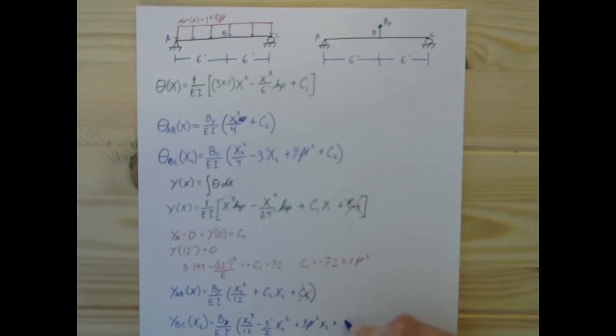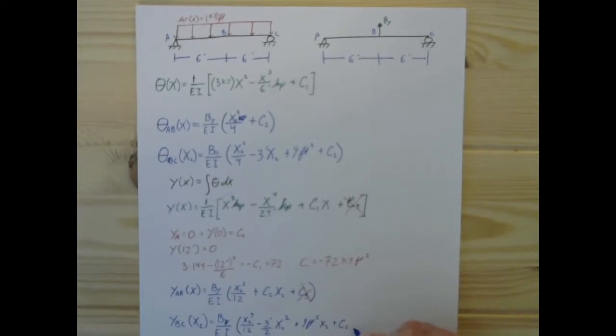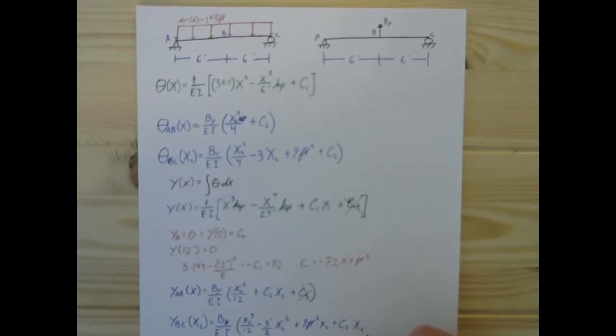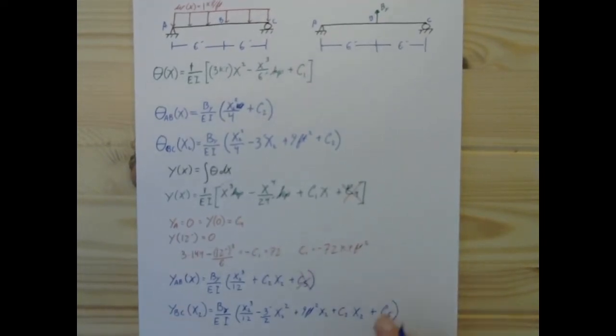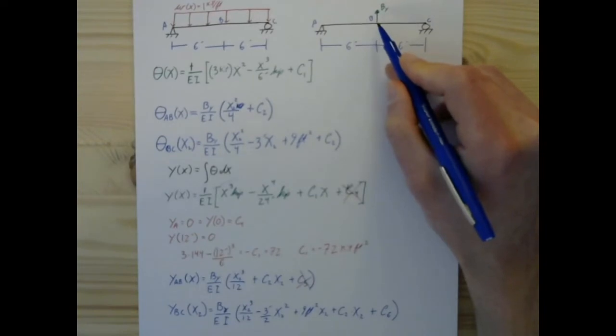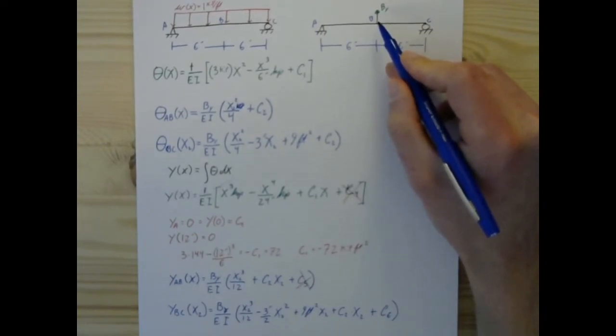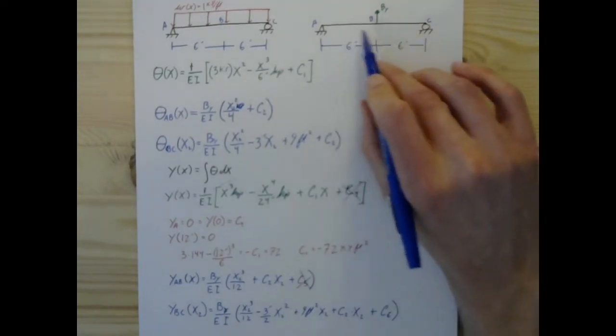x2 cubed over 12 minus 3 feet over 2 x2 squared plus 9 feet squared times x2 plus some constant of integration, C6, and that is going to be something. Right, that's not going to be 0 because there isn't a pin at b. Okay, fine, there is, but not in this beam.